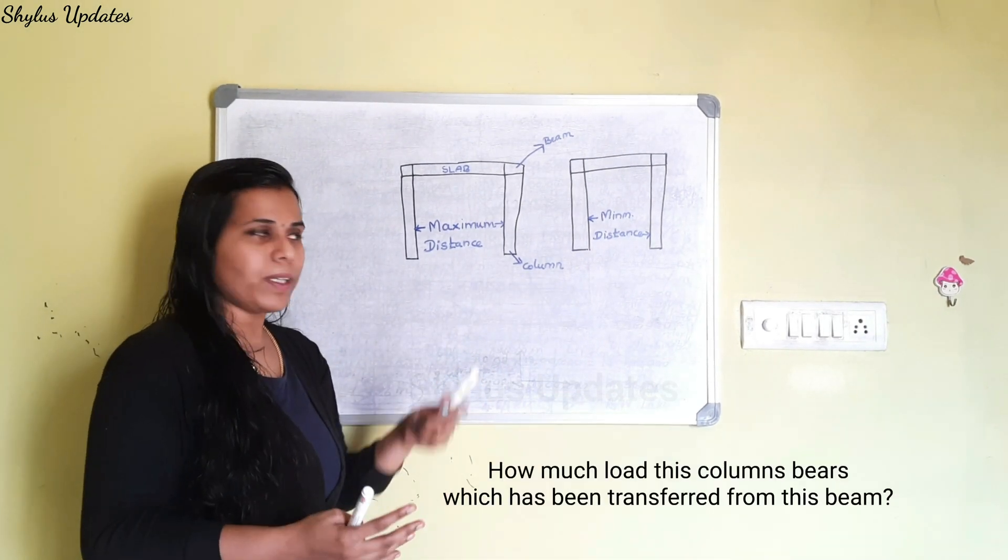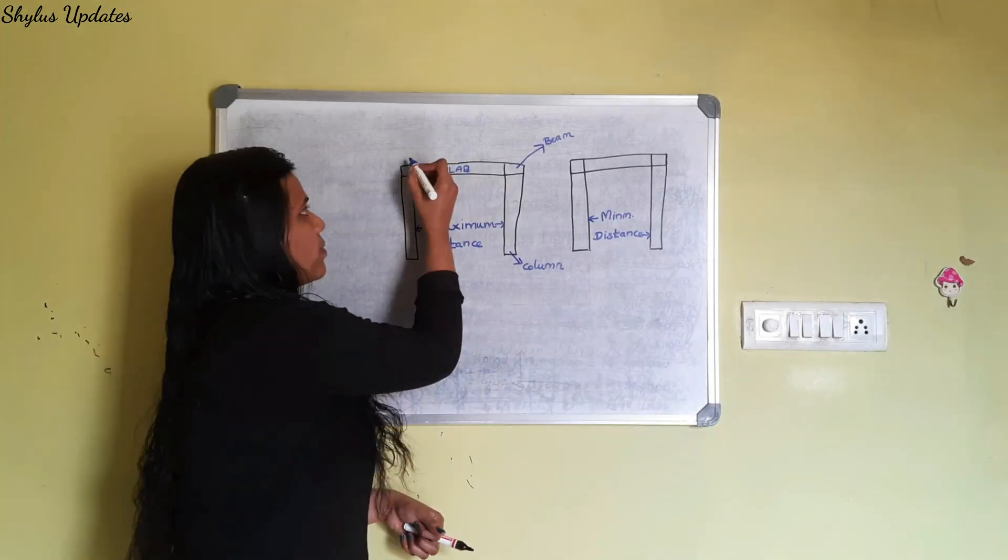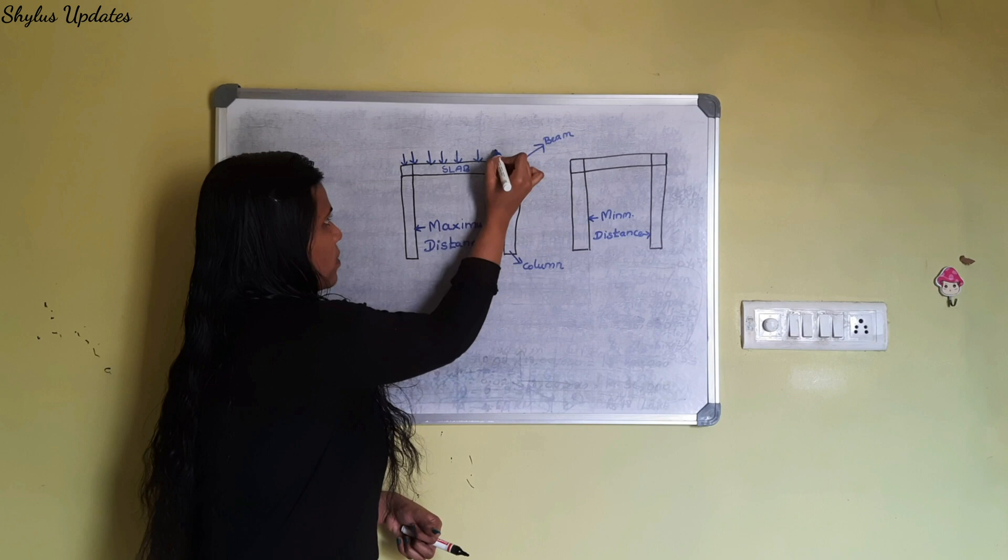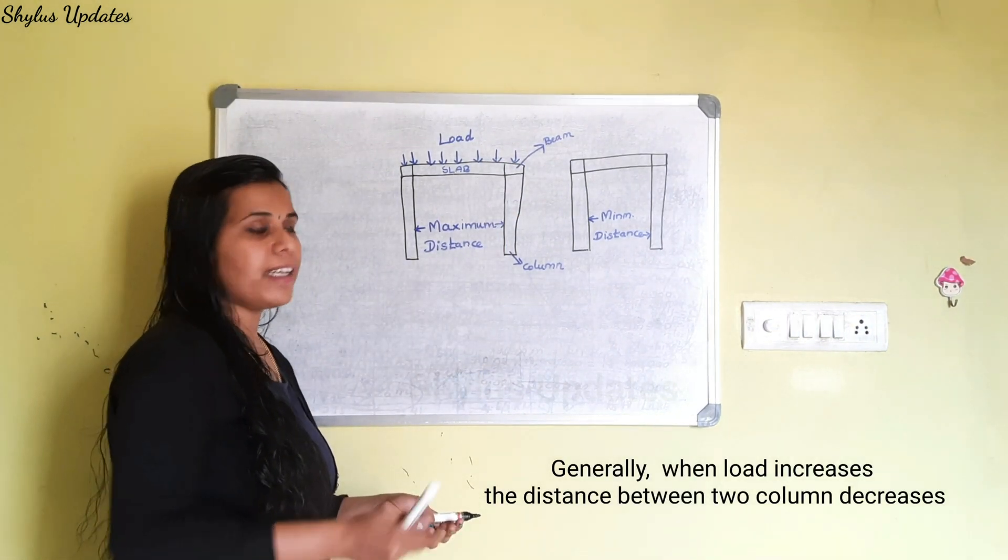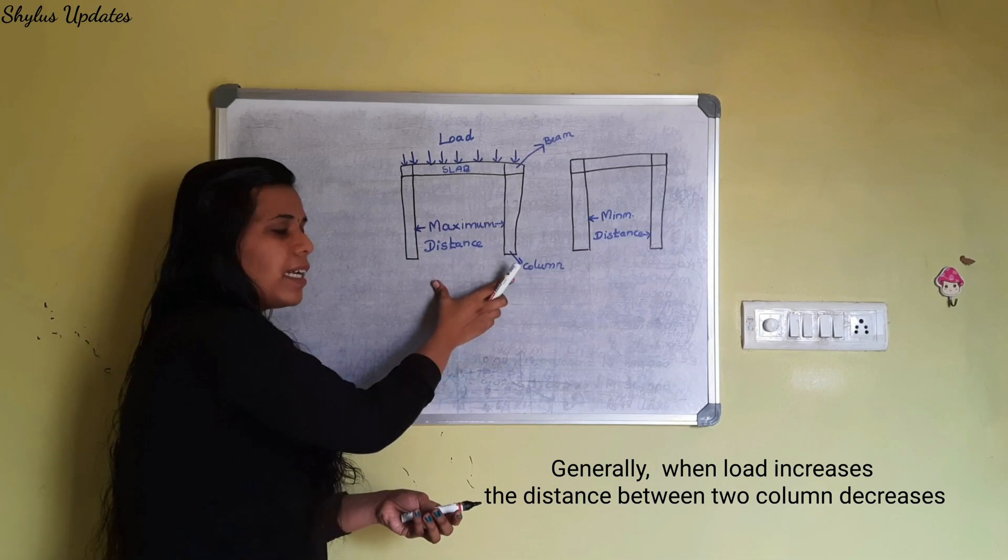Load. How much load this column bears which has been transferred from this beam? Generally, when load increases, the distance between two columns decreases.